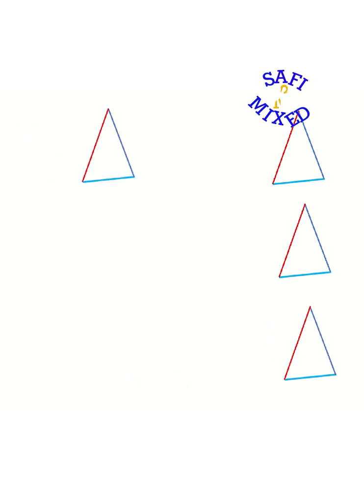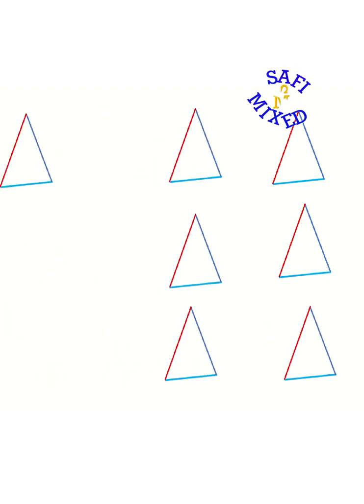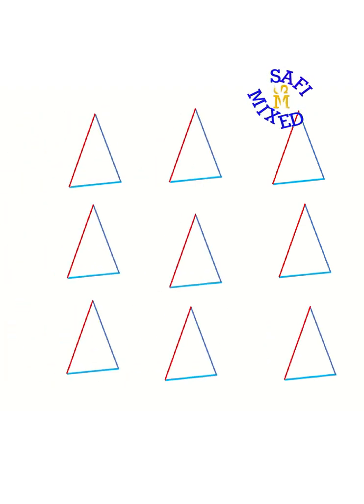At first this seems quite impossible as every single triangle would take 3 line segments and overall one would need 3 times 9 equals 27 line segments.